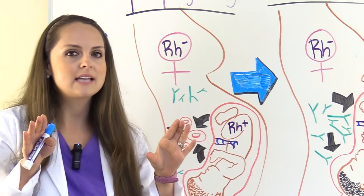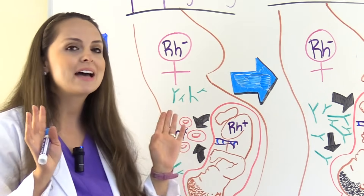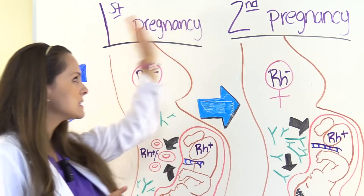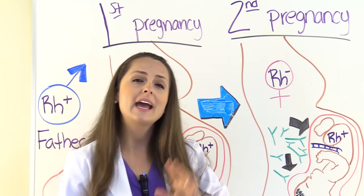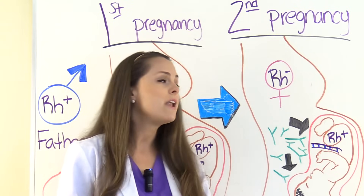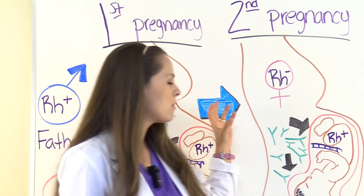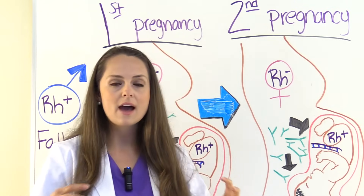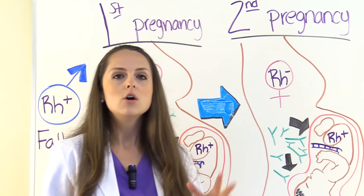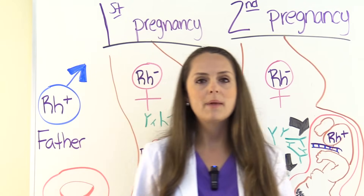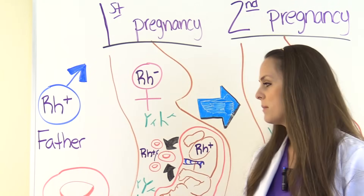The body says we've got to create these antibodies so next time we see this we can attack. And that's just what it does during the second pregnancy, whenever mom gets pregnant again and she carries an RH positive baby. These antibodies get in there, they attack the baby, causing severe anemia, heart failure, and jaundice — which we're going to go in depth about the pathophysiology, what's happening to the child, the prevention, and the nursing care.